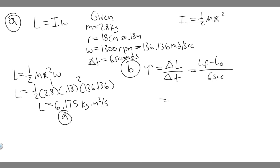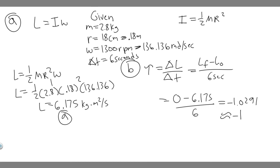L final is 0 because the wheel stops. L initial is 6.175, which we calculated in part A. So we have 0 minus 6.175, all divided by 6. That gives minus 1.029, which we can round to minus 1. The units for torque are newton meters. So the answer to part B is approximately minus 1 newton meter.